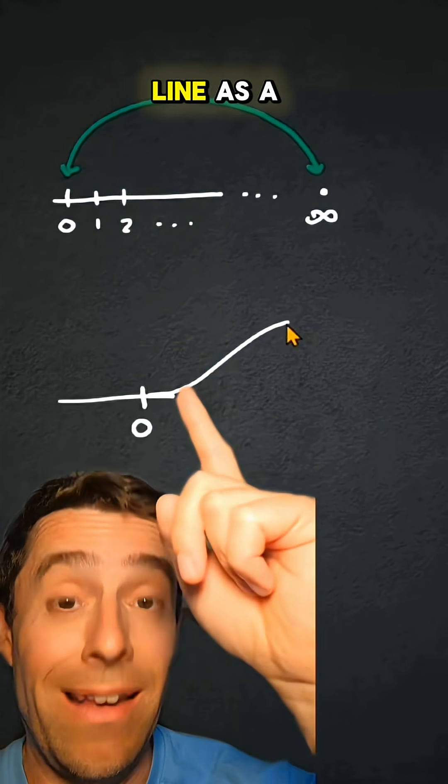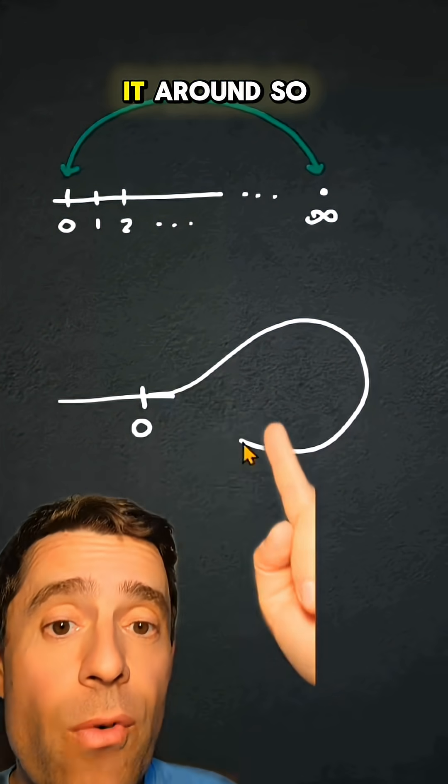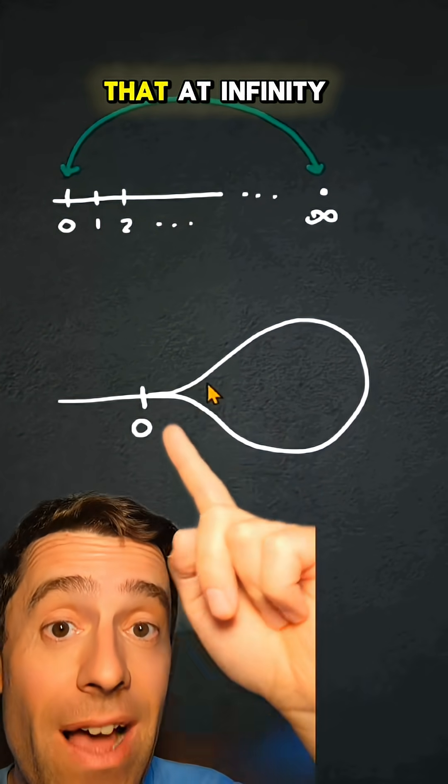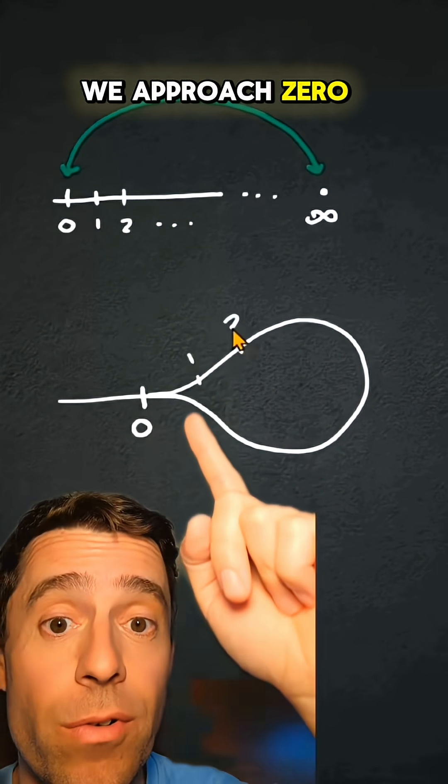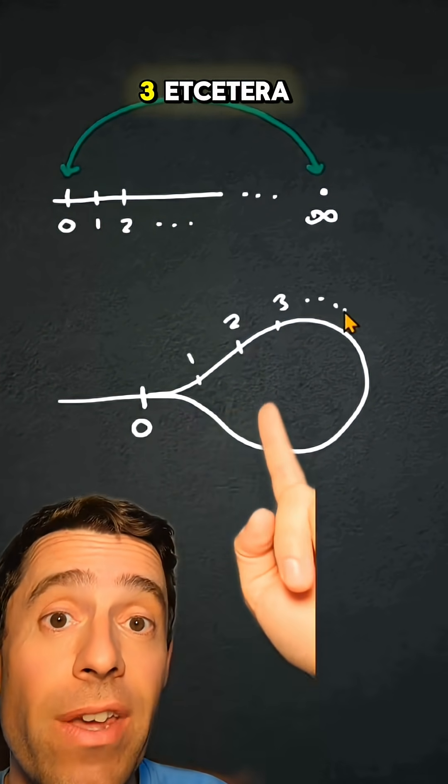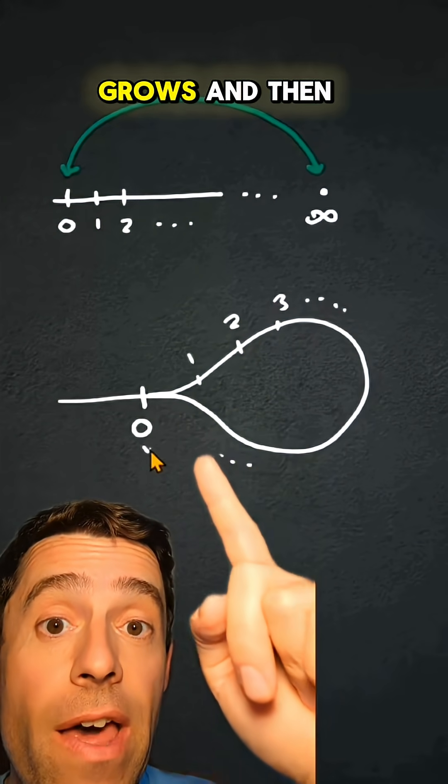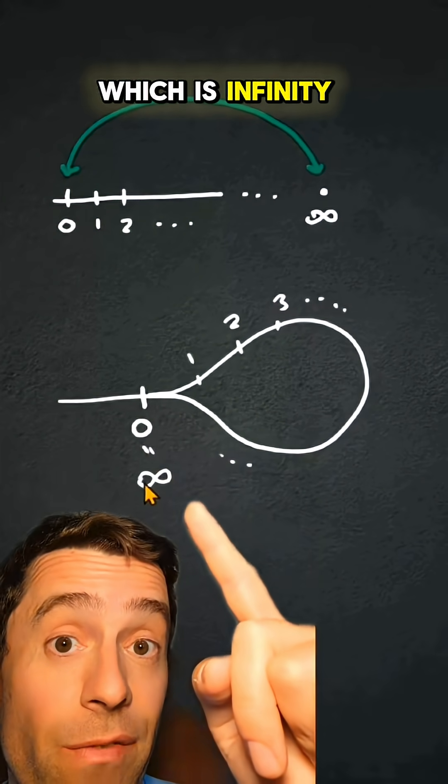So instead of drawing the real line as a line, we could wrap it around so that at infinity, we approach zero. So we have one, two, three, etc., and then it grows, and then it goes to zero, which is infinity.